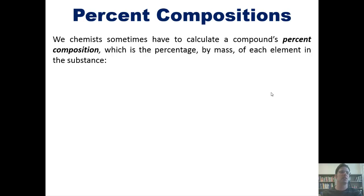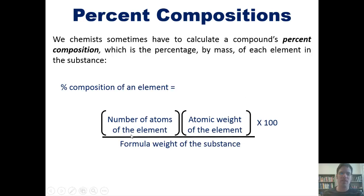That takes us to percent compositions. You see, we chemists sometimes have to calculate a compound's percent composition, which is the percentage by mass of each element in the substance. Now, to determine the percent composition of an element in a given formula, you use this approach. You take the number of atoms of that element in the formula, multiply it by the atomic weight of that individual element, and then divide all of that by the total formula weight of the substance, and then multiply all of that by 100. That's the percent composition of the element.